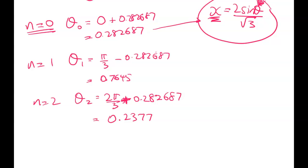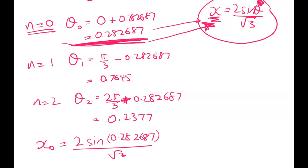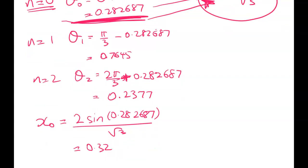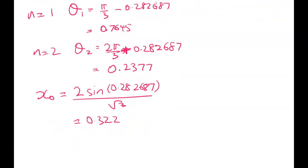So let's look at x naught. So x naught is going to be 2 sine 0.282687 over root 3. In other words I'm taking the theta value and I'm substituting in here to get my x value. When I do that I get 0.322. And I'm going to do the same thing so we're all good. So x1 is equal to what? 2 sine of 0.7645 over root 3 and that gives me 0.799.